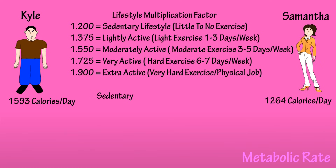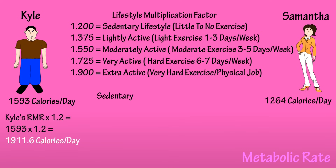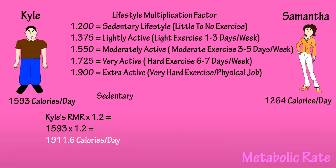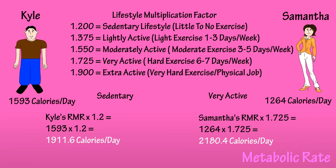Let's say that Kyle is very sedentary. So if we multiply his RMR by 1.2, we have 1,911.6 calories per day. Now Samantha's in the very active category, so we need to multiply her RMR by 1.725 and we get 2,180.4 calories per day. Based on these calculations, Kyle can consume 1,912 calories per day to maintain his current weight, and Samantha can consume 2,180 calories per day to maintain her current weight.